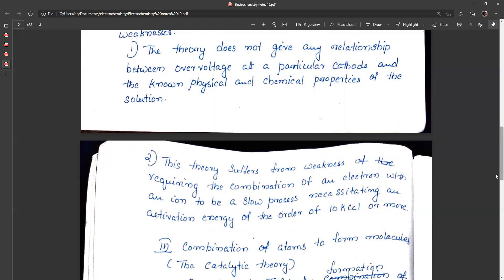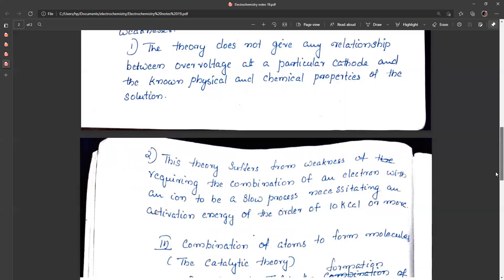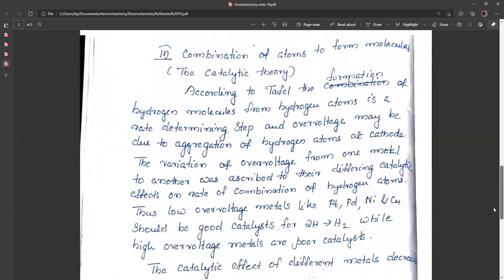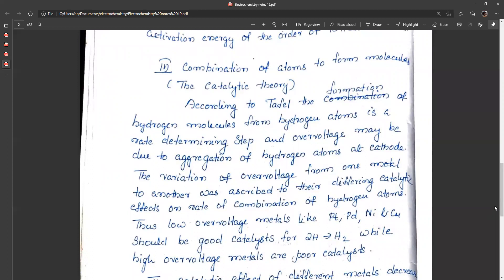The next theory of overvoltage is the Tafel theory, an important theory. It is otherwise called the catalytic theory, where the combination of atoms to form molecules is the slow step in the electrochemical process. According to Tafel,